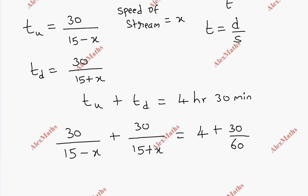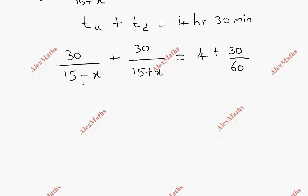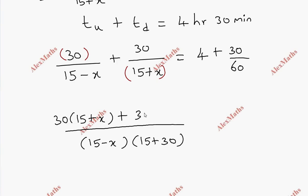That's 4 and 30 by 60, so 4 plus one-half. Now we take the LCM. The product is 15 minus x into 15 plus x. So 30 into 15 plus x plus 30 into 15 minus x, equal to 4 plus 1 by 2.